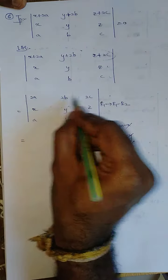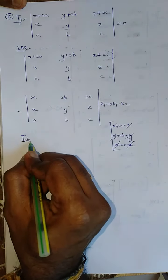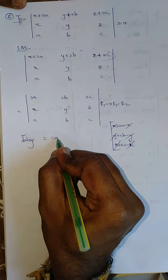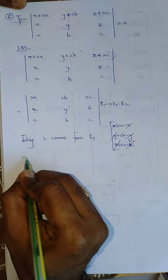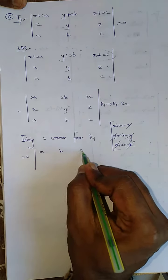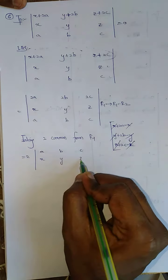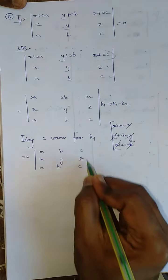Taking two common from R1, so if I am going to take two common, becomes A, B, C, X, Y, Z, A, B, C.